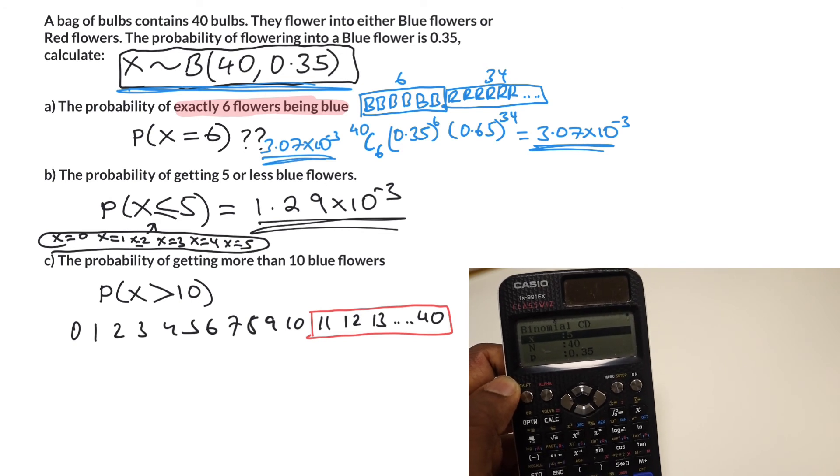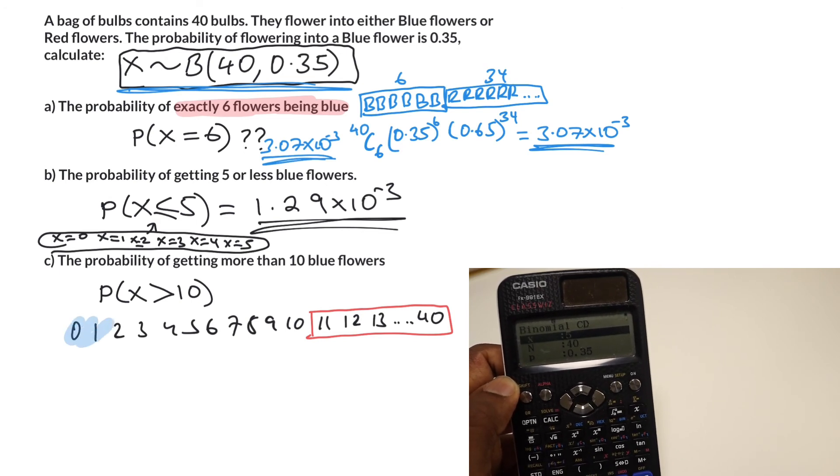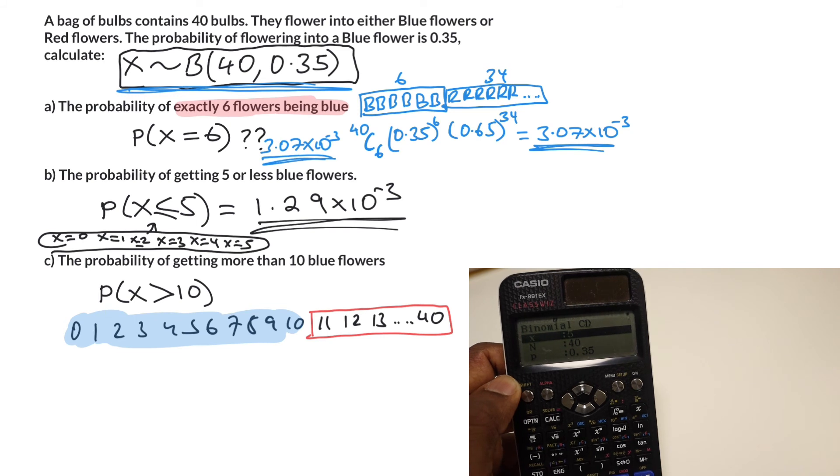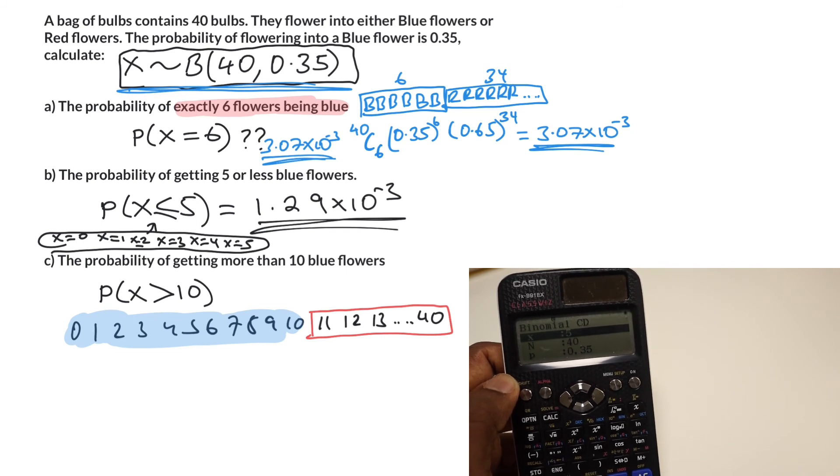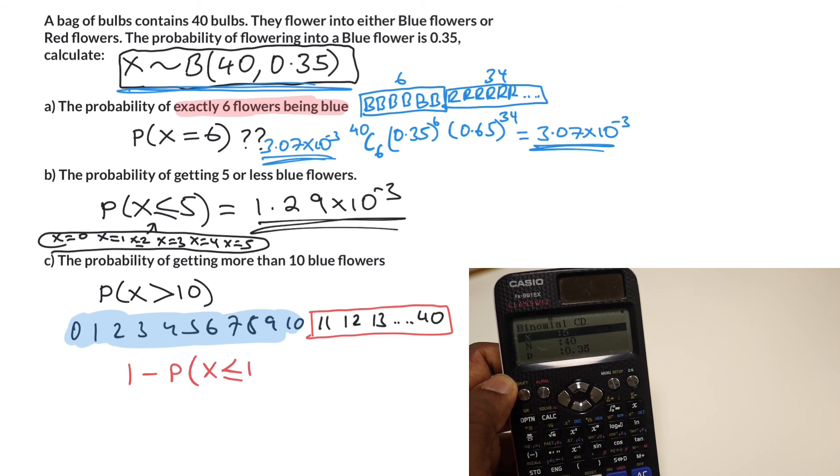But how are we going to get 11 or more? What we could do is get everything up to and including 10 and then take it away from 1. So we could do 1 subtract probability that x is less than or equal to 10.